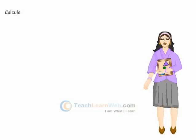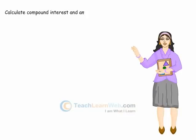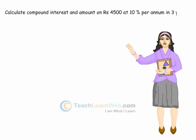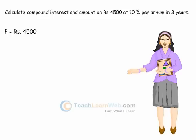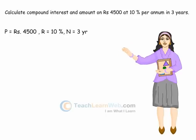Calculate compound interest and amount on Rs 4,500 at 10% per annum in 3 years. Here, P is equal to Rs 4,500, R is equal to 10%, and N is equal to 3 years.